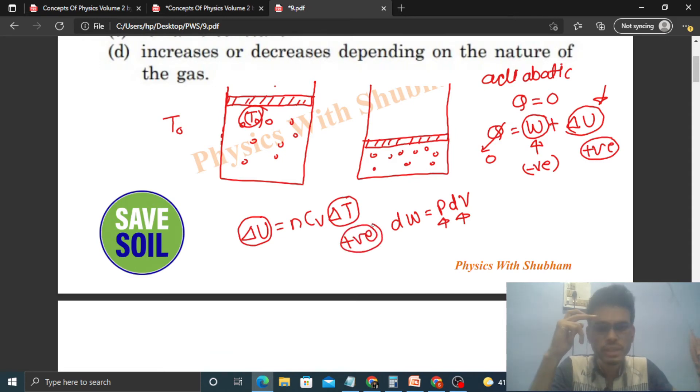And ΔU is nothing but nCᵥΔT. If ΔU is positive then ΔT will also be positive. It means the temperature of this gas will increase, let's say to T₁. Now you see, in the surroundings what is the temperature? T₀. And the gas's temperature is T₁. So what will happen is this cylinder body is made of metal, so heat will easily transfer. Where will heat flow from?